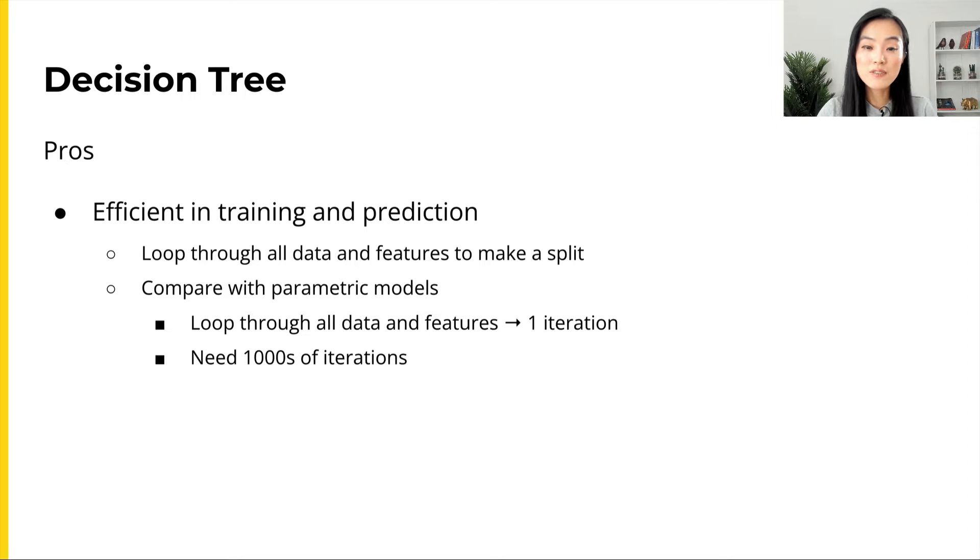The other advantage of decision trees is the training and the predictions are relatively efficient. So training a decision tree can be relatively fast. For training, the algorithm would simply find the best split in each node by looping through all the data points and the features in that particular node.